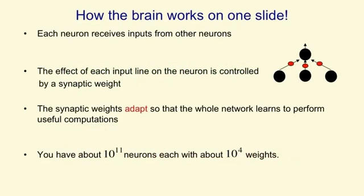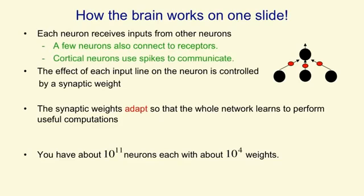So, all on one slide, this is how the brain works. Each neuron receives inputs from other neurons. A few of the neurons receive inputs from the receptors — it's a large number of neurons, but only a small fraction of them. The neurons communicate with each other in the cortex by sending these spikes of activity. The effect of an input line on a neuron is controlled by a synaptic weight, which can be positive or negative. These synaptic weights adapt, and by adapting these weights, the whole network learns to perform different kinds of computation.